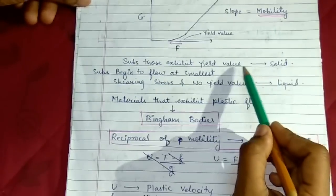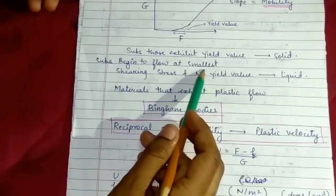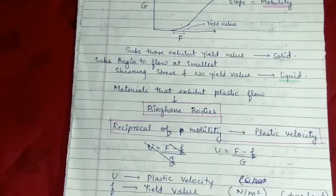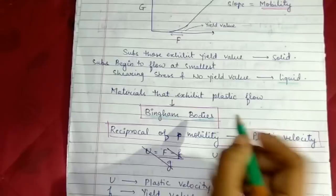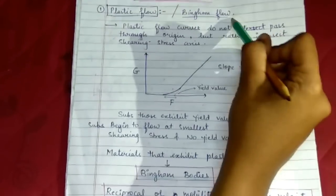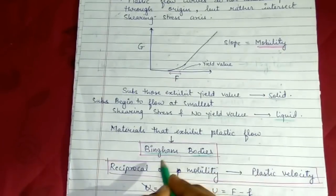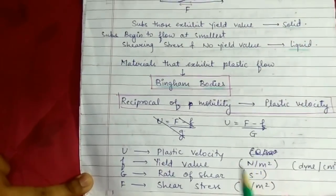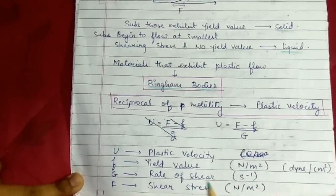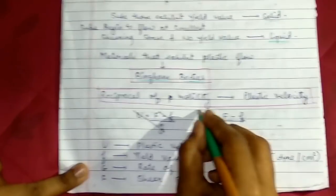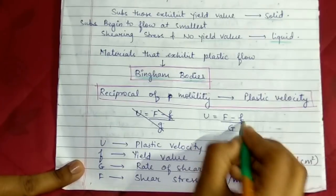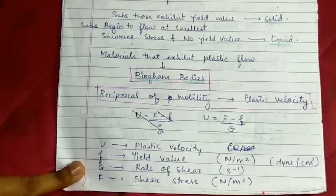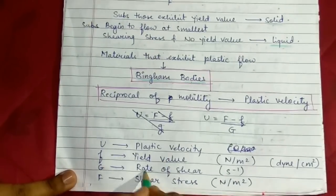Substances that exhibit yield value are solid, and substances that begin to flow at smallest shearing stress or no yield value are known as liquid. Materials that exhibit plastic flow are known as Bingham bodies. The reciprocal of mobility is plastic viscosity. Plastic viscosity is determined by u equals F minus f upon g, where small f represents yield value, capital F represents shear stress, u represents plastic viscosity, and g represents rate of shear.